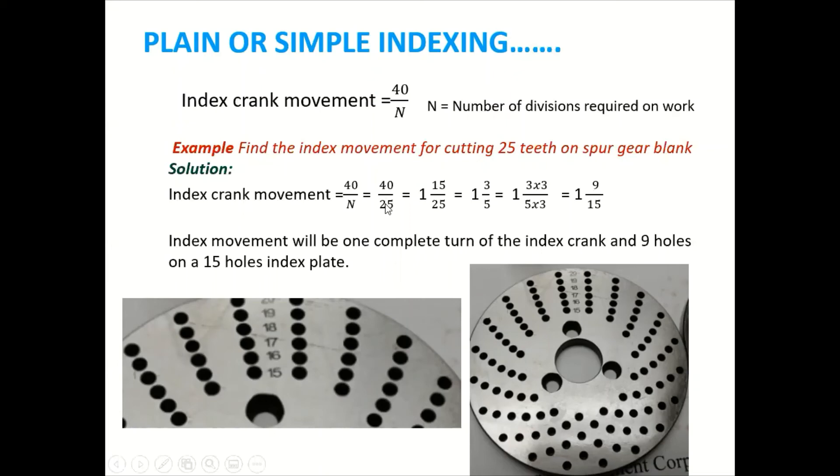So it is, we are dividing by 25. So here we are getting the one 15 by 25. If you do the fractional calculation, so one is nothing but the quotient and 15 is the remainder, and 25 is the divisor.